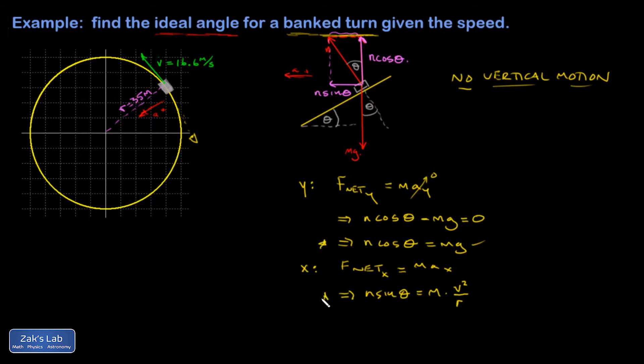So I have a system of equations here that has the normal force in it as an unknown and the angle as an unknown. And I'm going to use a standard trick here and divide the bottom equation by the top equation. And that gives me sine over cosine, which results in a tangent. And I've eliminated normal force from the equations, which is good because we don't need it.